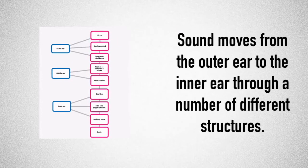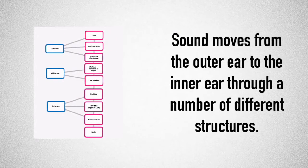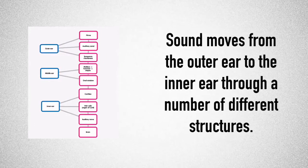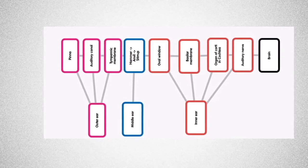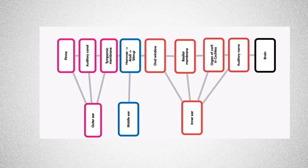and identify the energy transformations that occur. Sound moves from the outer ear to the inner ear through a number of different structures, and now we're going to have a look at the order of their structures based on whether they're found in the outer, inner, or the middle ear. In the outer ear, sound is transmitted as a wave through air in the auditory canal to the outer layer